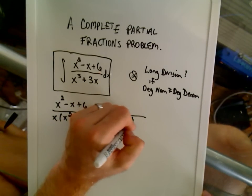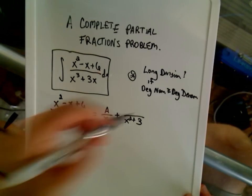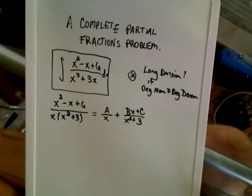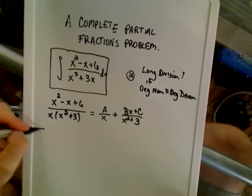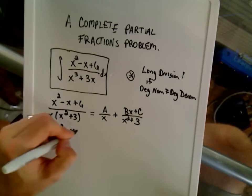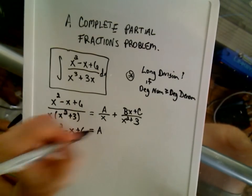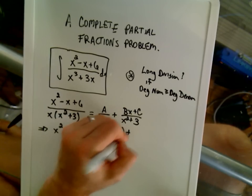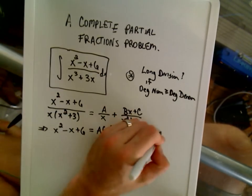My x squared plus 3 term will also get its own little fraction, and on top, I'll use a Bx plus C term for that. Okay, so if I get rid of the fractions by multiplying both sides by the denominator, I'll be left with x squared minus x plus 6. Then on the right side, I'm going to have A times x squared plus 3, and then I'm going to be left with a Bx plus C times just x.